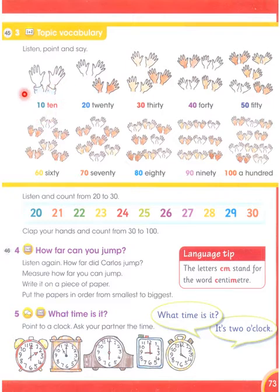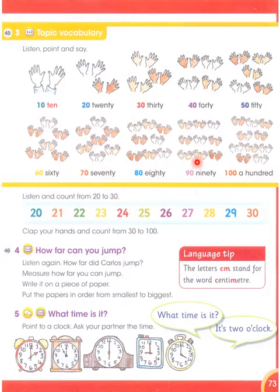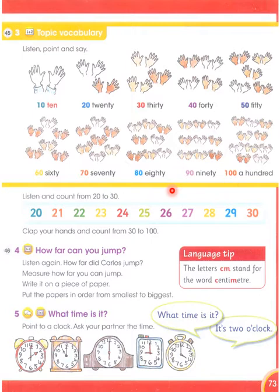This is ten fingers, twenty, thirty, forty, fifty, sixty, seventy, eighty, ninety, and a hundred. So these are 10 little fingers, 20 little fingers, 30 little fingers, 40 little fingers, 50 little fingers, 60 little fingers, 70 little fingers, 80 little fingers, 90 little fingers, then 100 little fingers in the air.